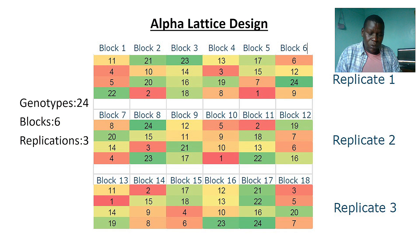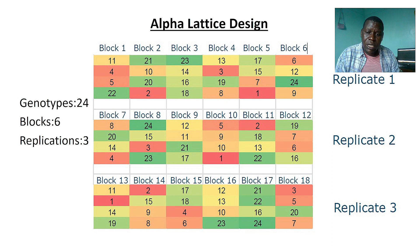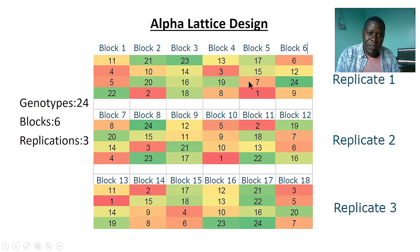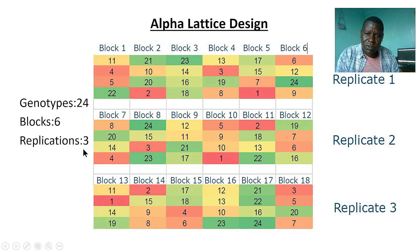I want to show you how to analyze your data generated from Alpha Lattice Design. For those who have no idea, let me quickly rush through how the design looks like. Basically, this is the design — for instance, here we have 24 genotypes and we want to plant them in three replications.